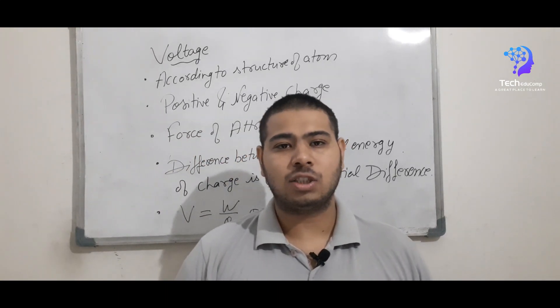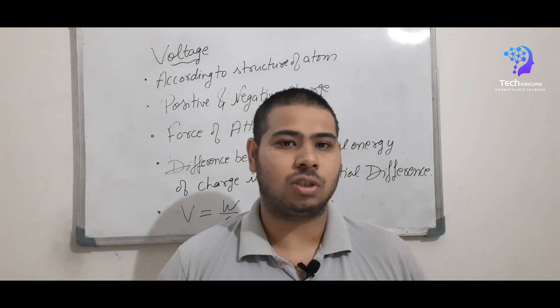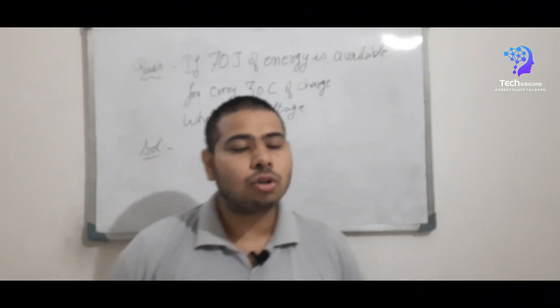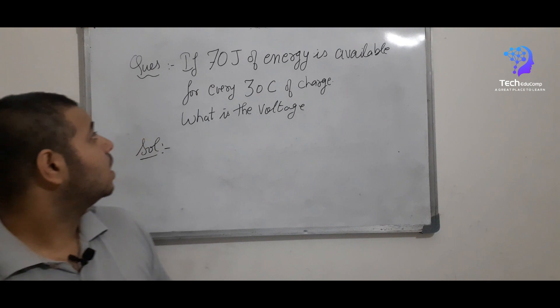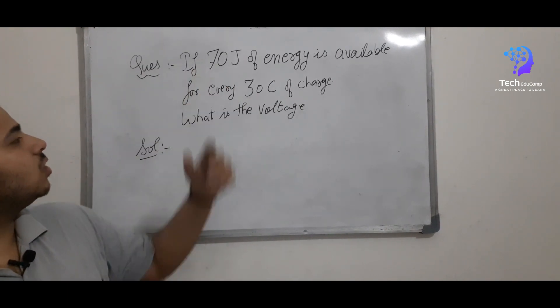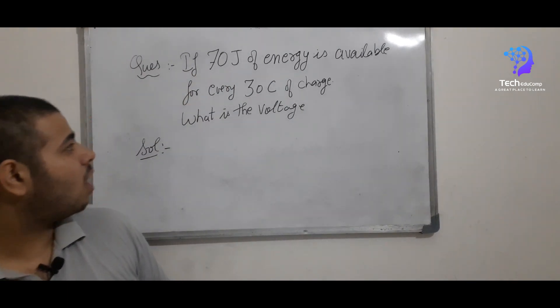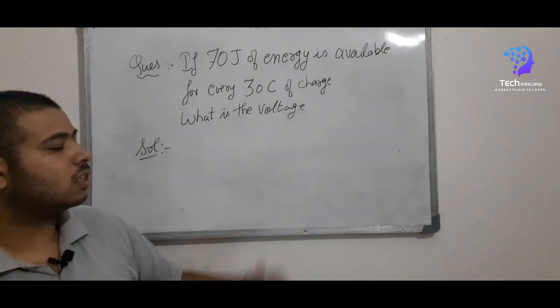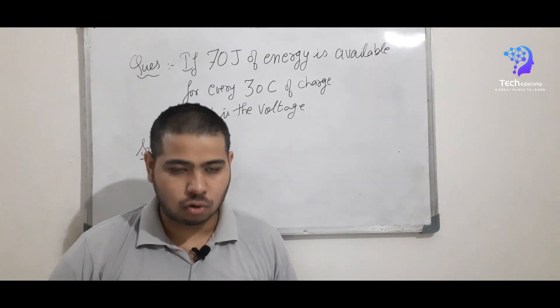Now let us do one small example, one small question based on this topic. So the question for this topic is this one. If 70 J of energy is available for every 30 C of charge, what is the voltage? So we have to calculate the voltage here.